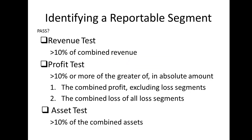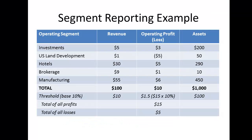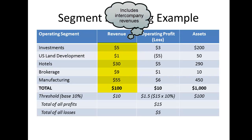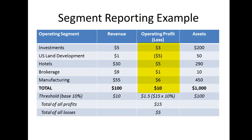Now let's walk through an example. Here we have our five operating segments: Investment, U.S. Land Development, Hotels, Brokerage, and Manufacturing. The first column lists the revenues for each business, and note that it would include intercompany activities for the purposes of applying this test. The second column has the operating profits and losses, and the third column the asset values. The 10% thresholds are calculated.